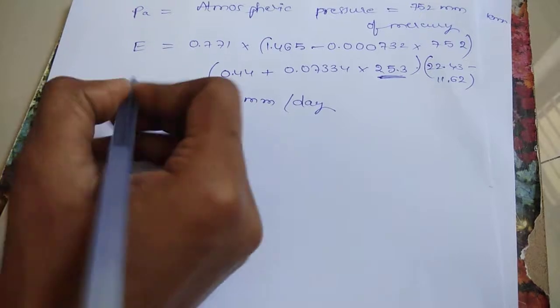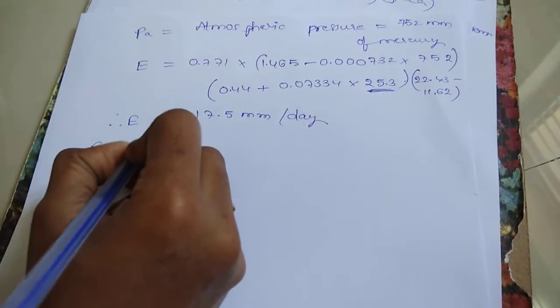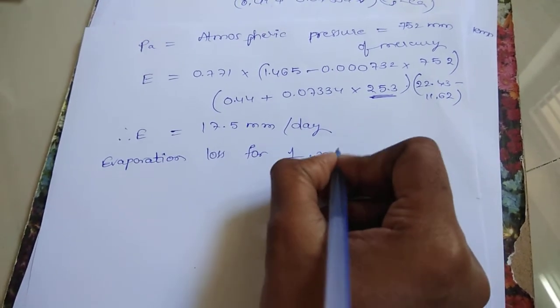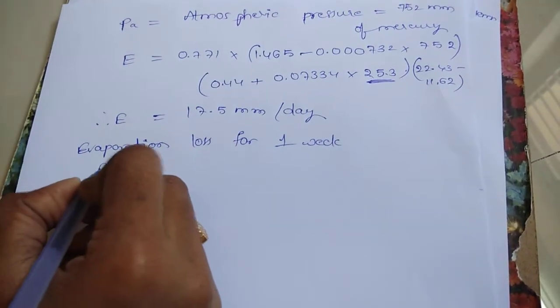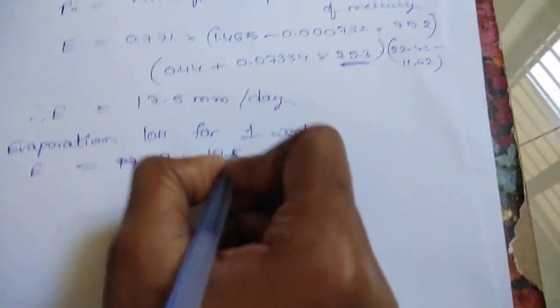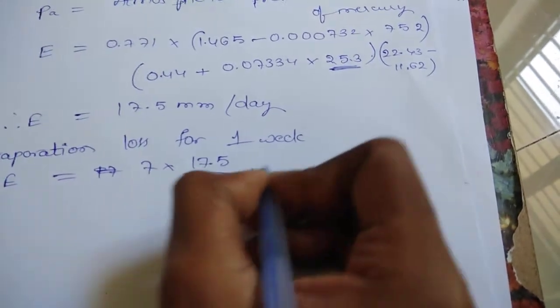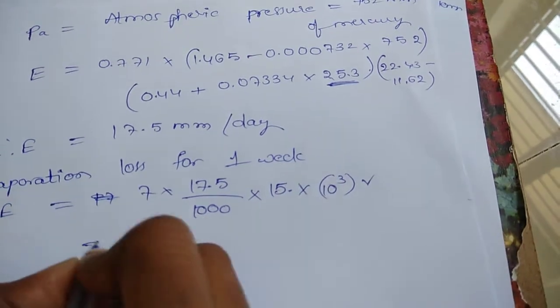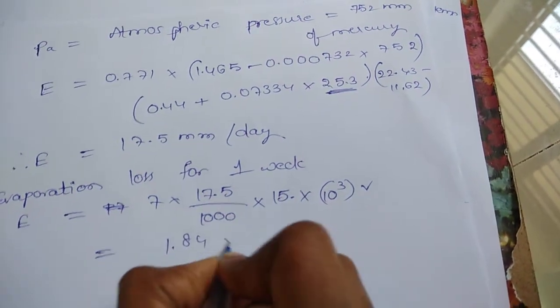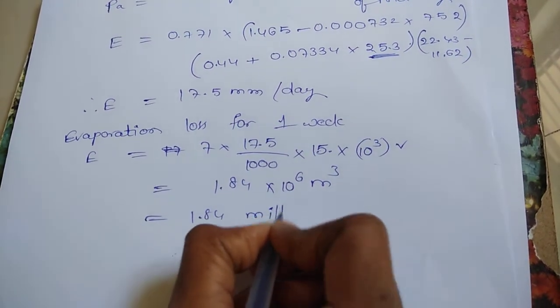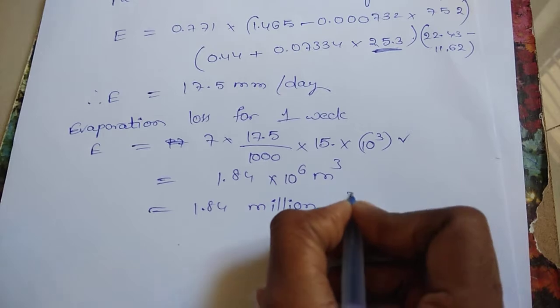After finding this evaporation, you have to find out the evaporation loss for 1 week. E equal to 7 days into 17.5 into area 15. So, finally, you got 1.84 into 10 power 6 meter cube. It is also written as 1.84 million meter cube.